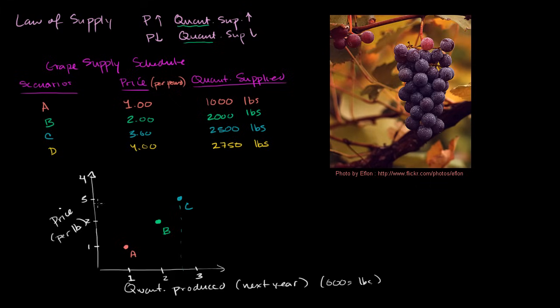And then scenario D, at $4, actually let me be a little bit clearer with that because we're getting kind of close. So this is 2,500 pounds, gets us right over here. This is scenario C. And then scenario D, at $4, 2,750. So 2,750 is like right over there. So that is $4. That is scenario D.